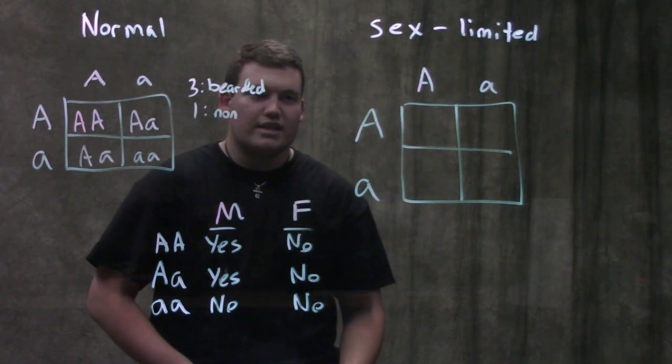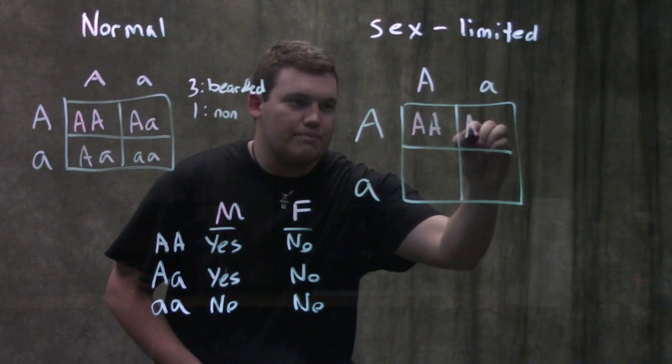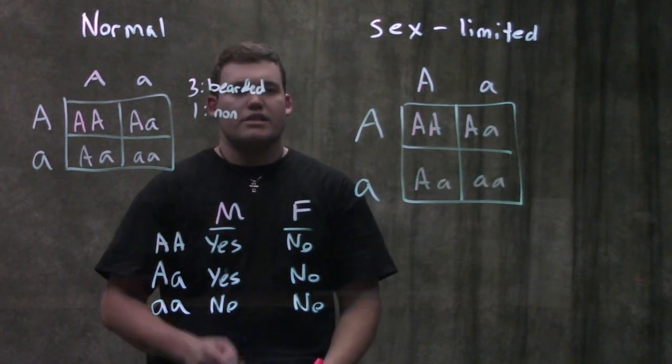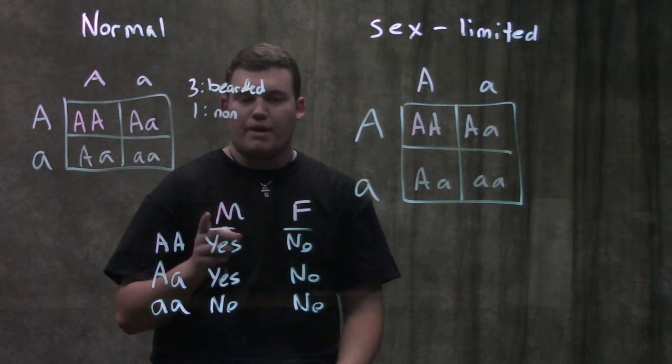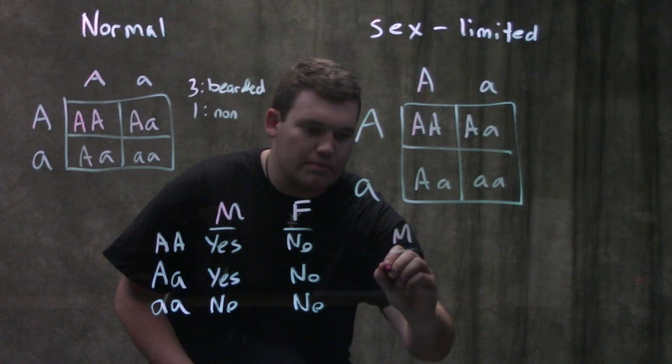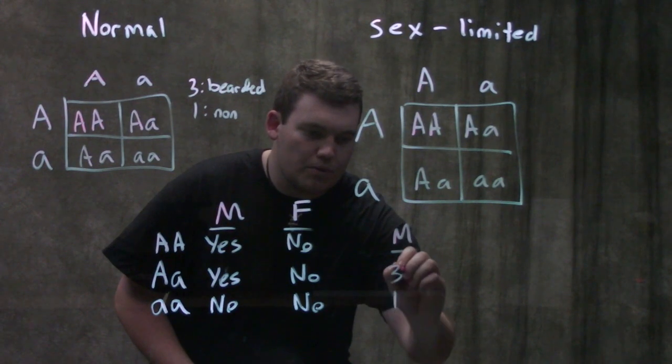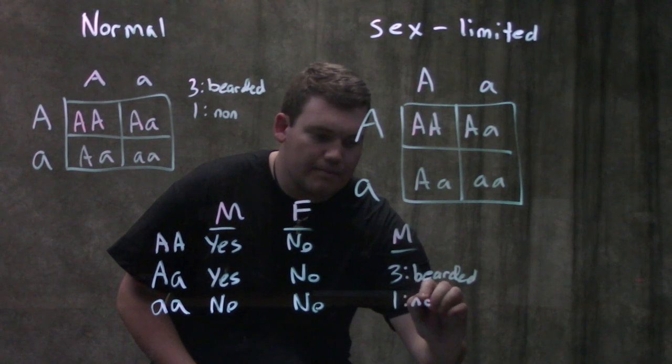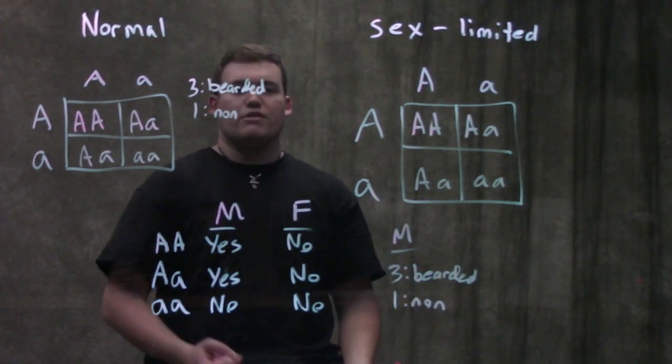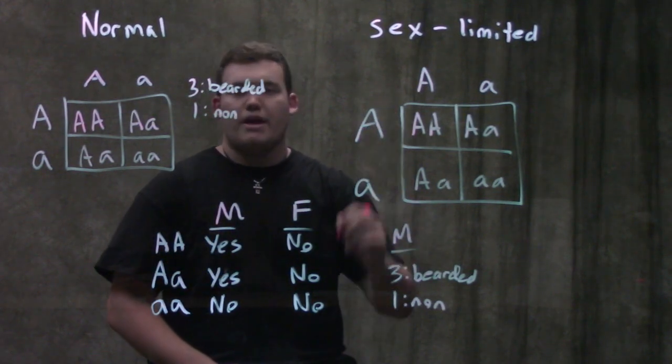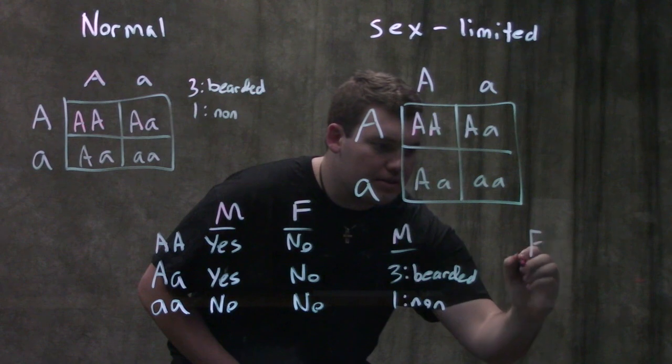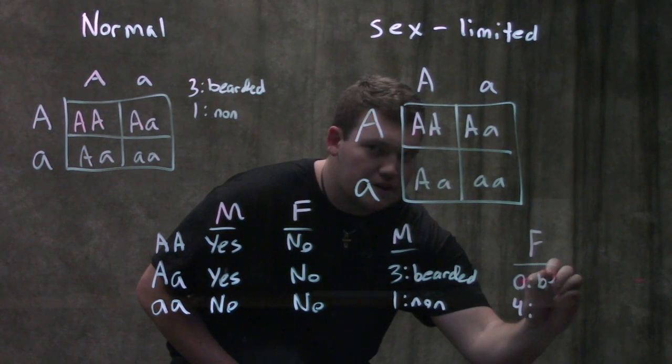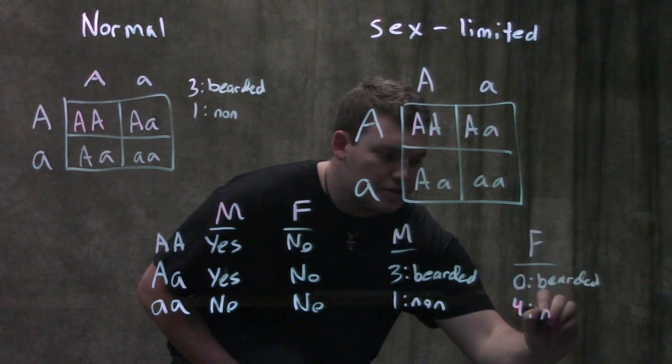If this trait were inherited in a sex-limited fashion, our Punnett square would look the exact same. But what we're actually going to see here is the same percentage of males, right? So males, it's going to be 3 to 1, bearded versus non. But what are we going to see in females? Because this trait is limited this time to males, what we're actually going to see is that females, it's going to be 0 to 4, bearded versus non.